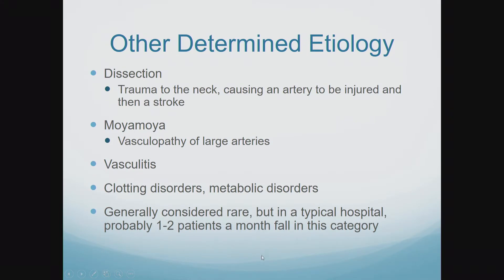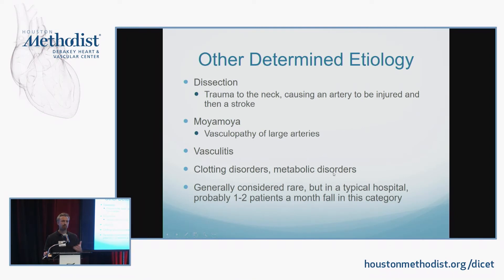Other determined etiologies are lumped together because they're relatively rare. Dissection is more often seen in younger patients, certainly more often in smokers, and trauma to the neck such as from chiropractors or MVAs is a main cause. Moya Moya presents in young patients with occlusion of the distal intracranial carotid — not the carotid bifurcation. Vasculitis is often invoked but rarely present, and more often occurs in the ACA territory. Clotting disorders and metabolic disorders should be looked for. Collectively, we probably have one to two patients a month with these rare diseases.